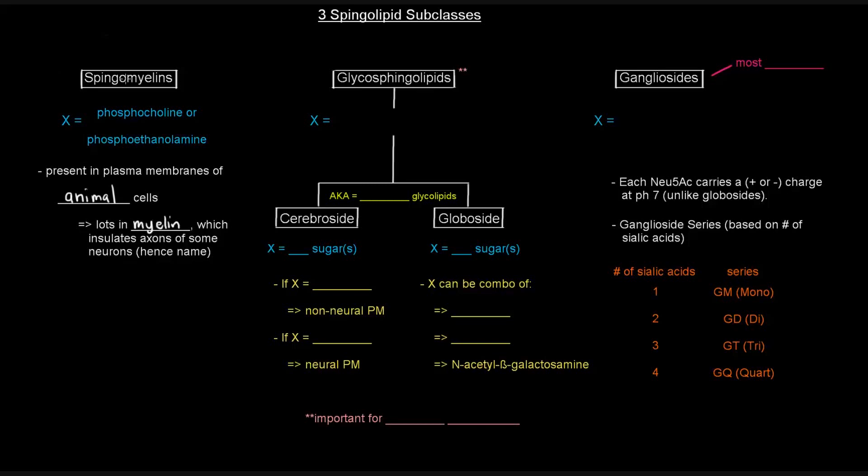That's sphingomyelins. If you have phosphocholine or phosphoethanolamine, you have these guys, because they have the phospho portion, these are phospholipids or sphingophospholipids. So, they are phospholipids.